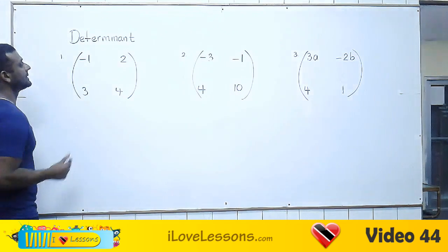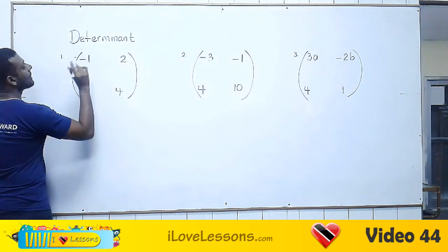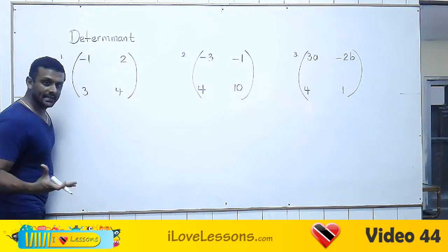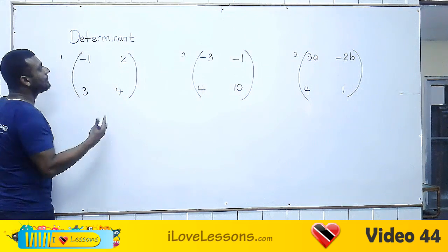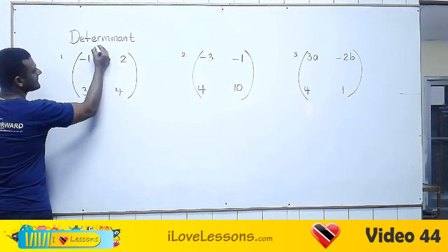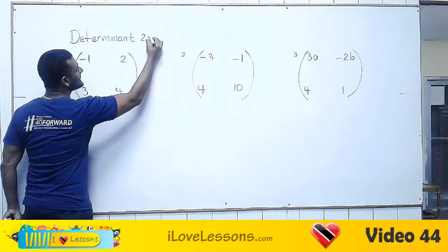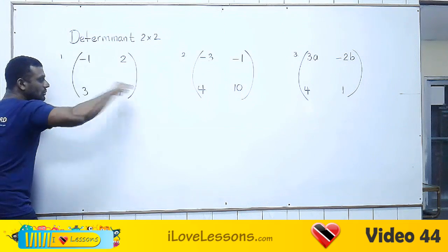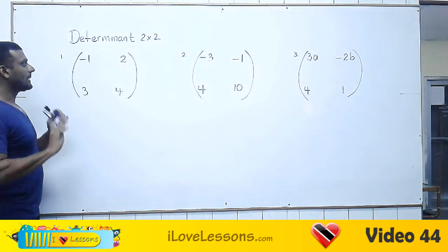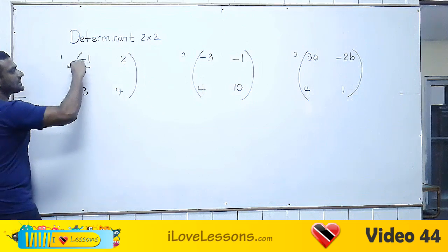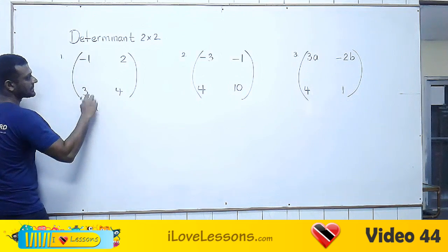So let's find the determinant of a matrix. If you're writing the CXC exams, you will only be asked to find the determinant of a two-by-two matrix — that's the one with two rows and two columns. You'll notice in the two-by-two matrix there are four numbers.